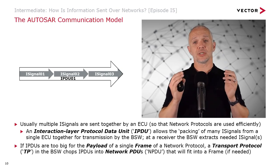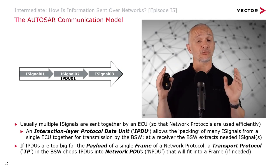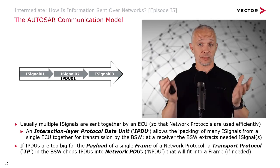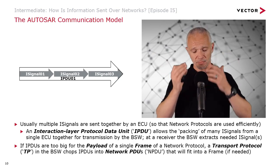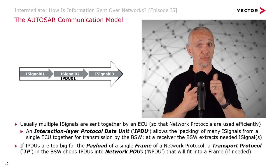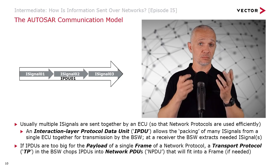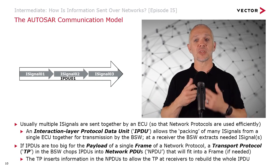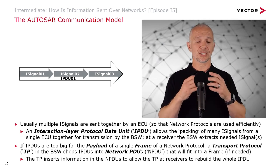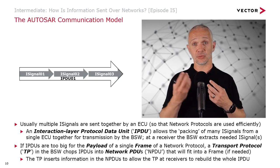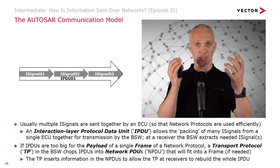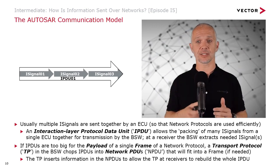It might be that we design an IPDU that's too big for the payload of a single frame of a network protocol. In this case, we can make use of a transport protocol, or TP, in the basic software. This chops IPDUs up into Network PDUs, or NPDUs, that will fit into a frame. The transport protocol also inserts information into the NPDUs to ensure the receiving transport protocol can reassemble things in the right order. The transport protocol operates on both the sender and receiver side.